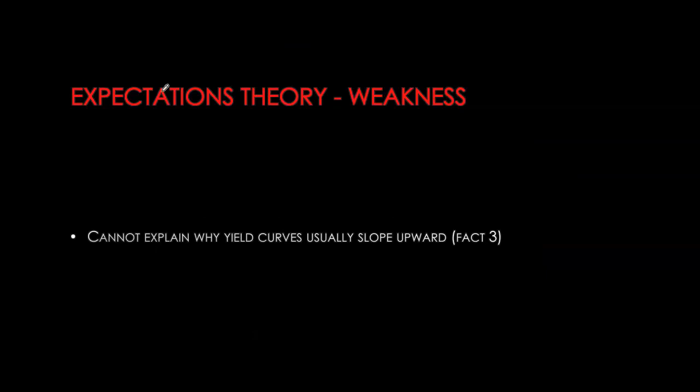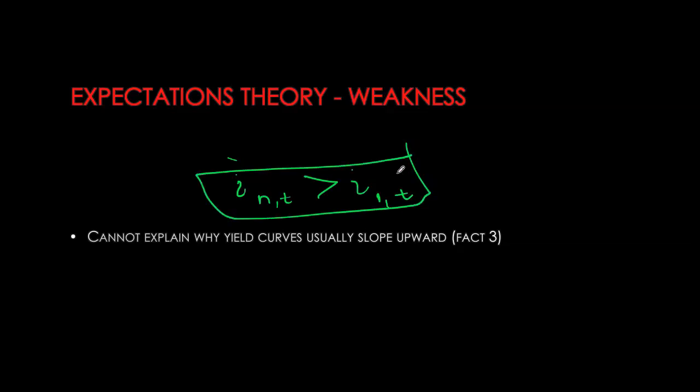However, one thing the expectations theory misses is why yield curves tend to be usually upward-sloping. Looking at the historical time series, there were very few periods with inverted yield curves — most of the time the yield curve is upward-sloping. The theory gives no answer as to why yields on long-term bonds are generally higher than yields on short-term bonds.